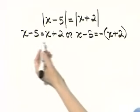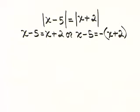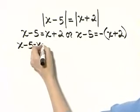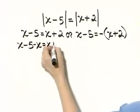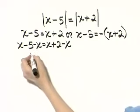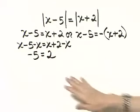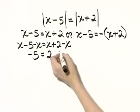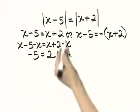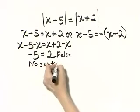Let's solve the equation on the left side. I will subtract x from both sides, moving variable terms to one side and constants on the other. x minus x gives 0, so I'm left with negative 5 equals 2. When all variables subtract out and you have a false statement — negative 5 equals 2 is false — the original equation has no solution from this case.